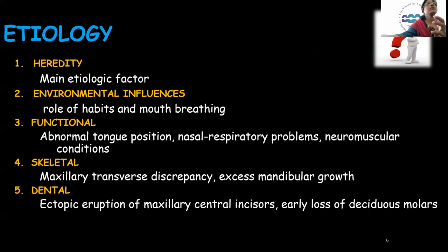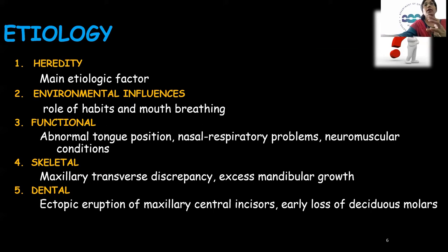The etiologic factors relating to Class 3 malocclusion include hereditary, environmental influences, functional, skeletal, and dental factors. Hereditary is one of the main etiologic factors — Class 3 malocclusion is largely inherited and is familial in nature.